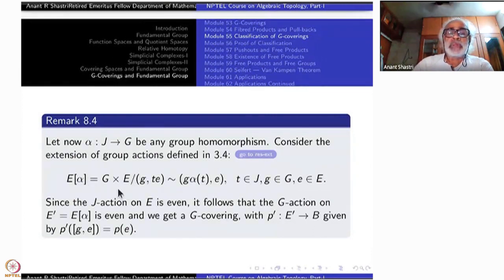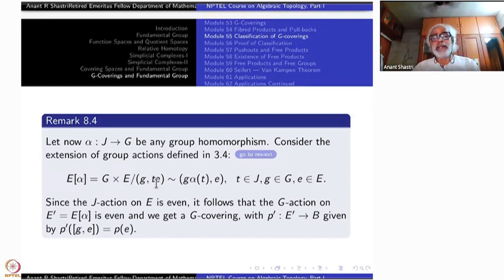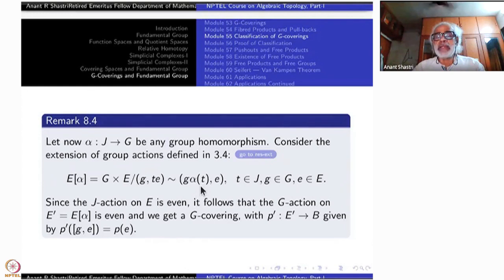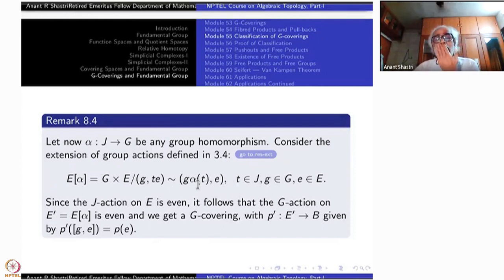E_α is G × E, the total space, but now we take a quotient via an equivalence relation: (G, T·e) is identified with (G·α(T), e), where T is an element of J. Here α(T) is an element of G, so G and α(T) are combined inside G by the group operation. This is an equivalence relation, and you go modulo this equivalence relation — that is the space E_α.